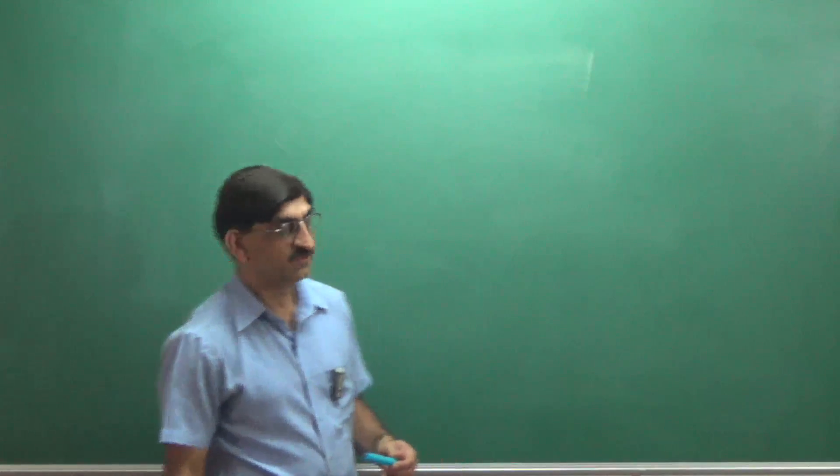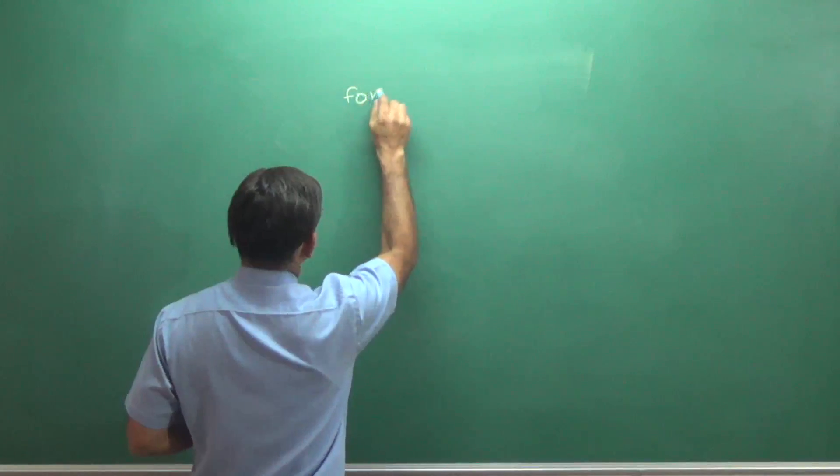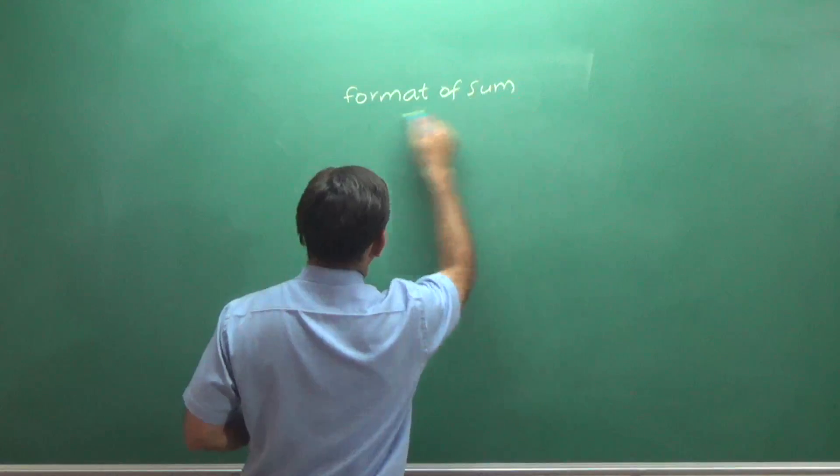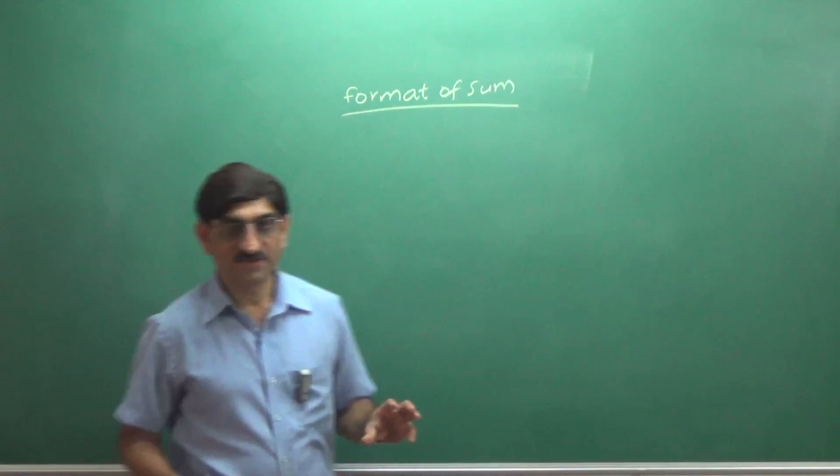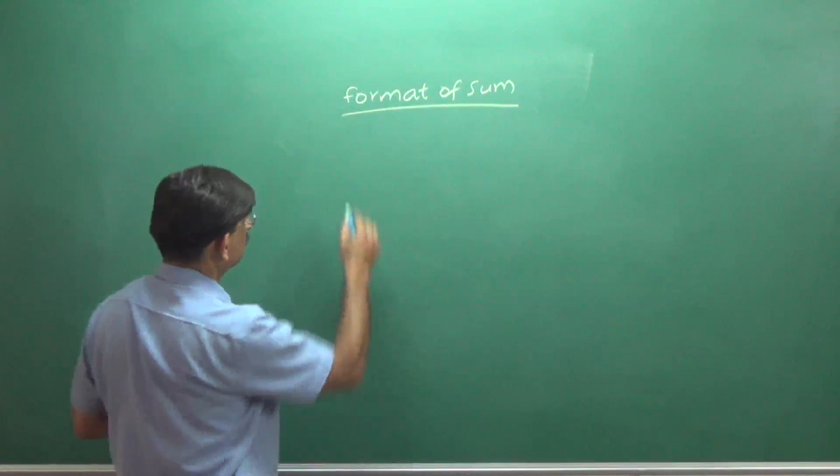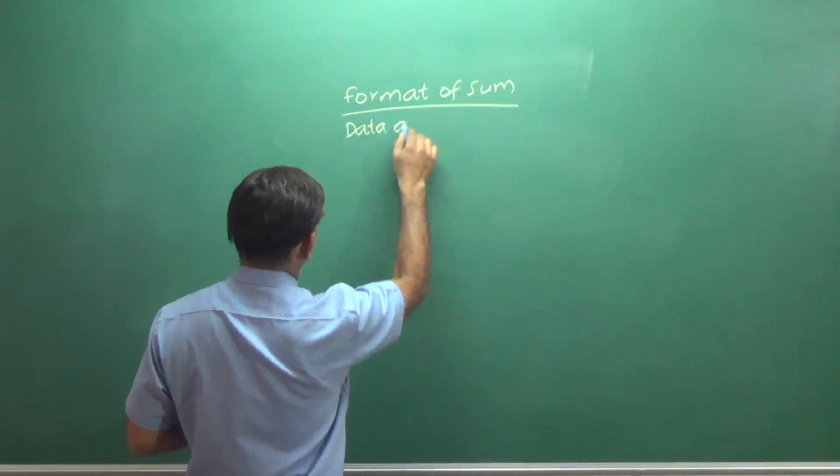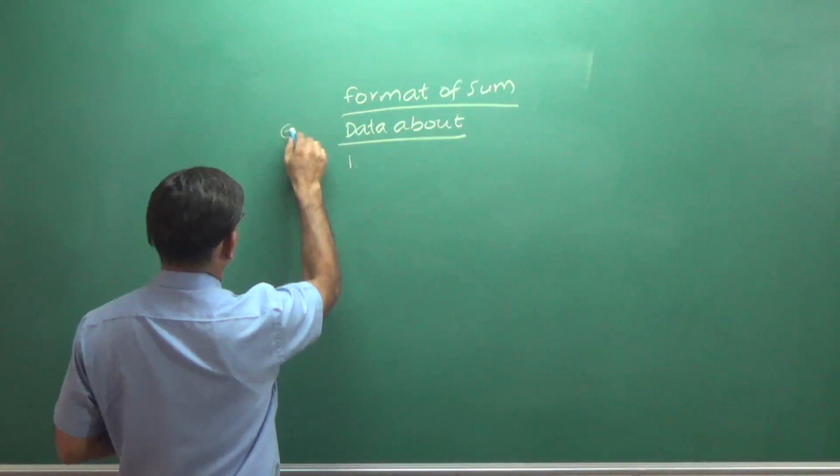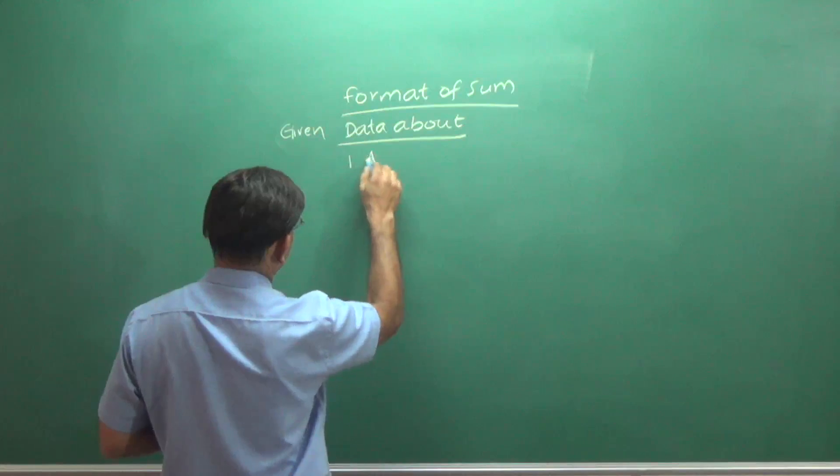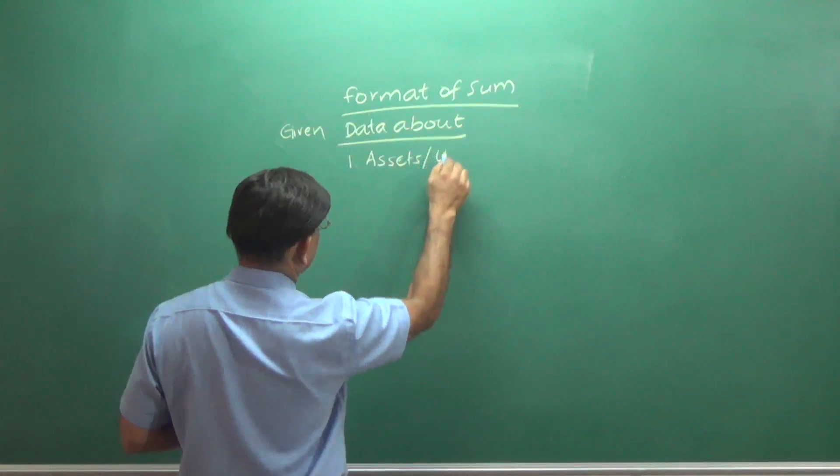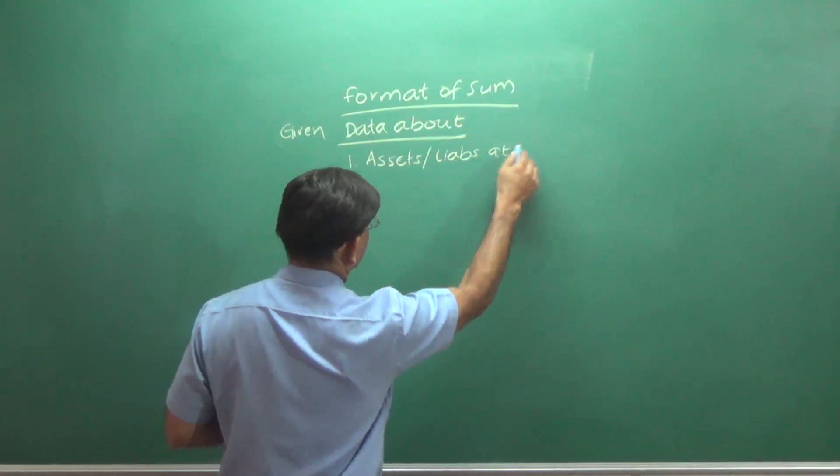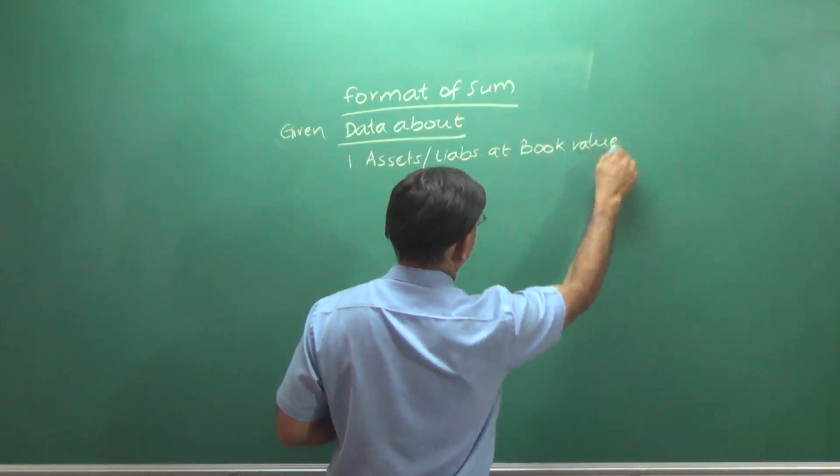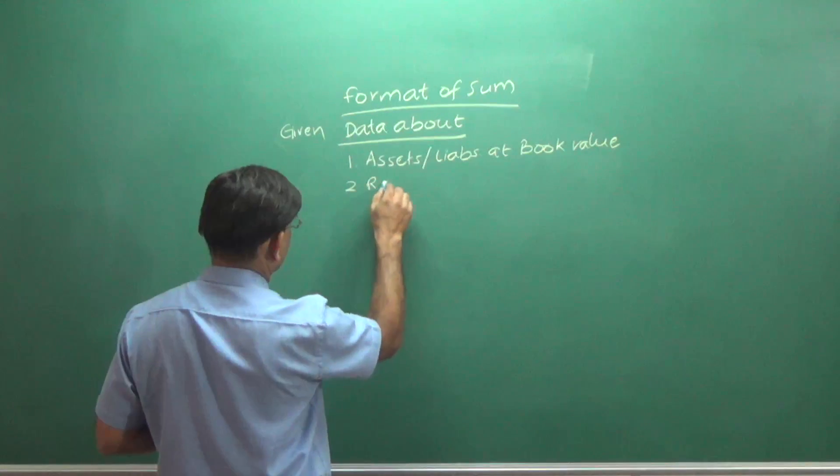Here, the format of the sum in this chapter is, we will be given data about the assets. Realization of assets and liabilities at book value. Realization of assets,